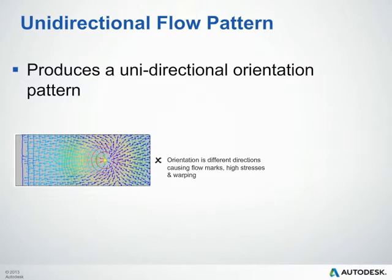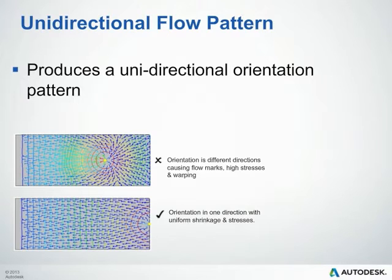The first design principle is to produce a unidirectional flow pattern when possible. When you do this, it also produces a unidirectional orientation within your part. As you can see in the top image, the orientation is different in directions, causing flow marks, high stresses, and warpage. In the image below, the orientation is in one direction with uniform shrinkage and stresses throughout the part. Naturally, this is a flat plate, so it's easy to say with this component, but you can apply these principles to your parts as well.